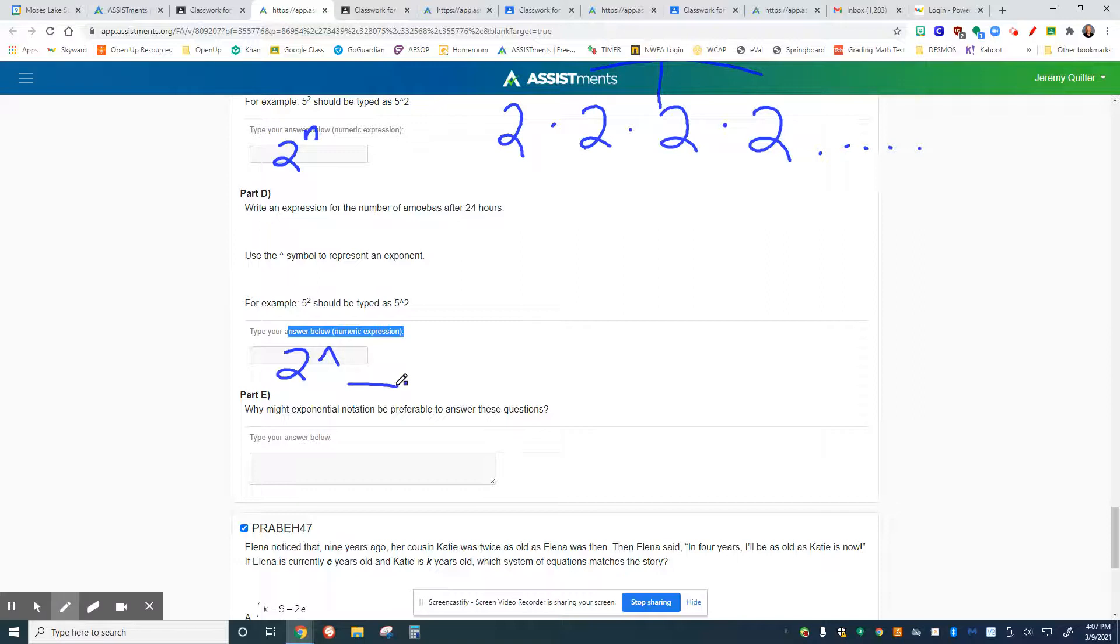Okay. And then give me an example for this or an explanation. It says, why might the exponential form or the exponential notation be preferable to answer these questions? So specifically, this one, I want you to think about part D. That's kind of the big idea. When you get to a number like this, I'm going to tell you it's a really big number. After 24 hours, how many amoeba are there? That's this number, which is going to be a really big number. Why would it be better to write it in exponential form instead of just in standard notation?